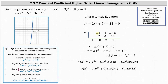We bring down the one, multiply by two, add, multiply by two, add, multiply by two, add. The result is one, zero, nine, zero, which indicates the remaining factor is r squared plus nine. So now in factored form, we have the quantity r minus two times the quantity r squared plus nine equals zero. This indicates r equals two, which we already knew from the graph. And then r squared plus nine must equal zero. Subtracting nine and square rooting both sides, we get r equals plus or minus three i.